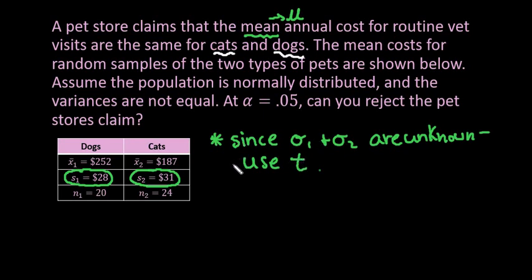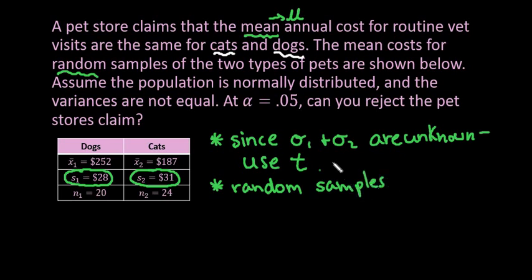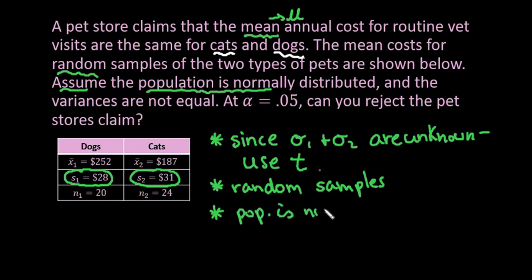For any type of hypothesis test, it's always important to have a random sample — it does tell us that we have random samples — which helps control bias. Even though bias may still be present, random samples do help control that. And then in order for the central limit theorem to kick in, you either have to have samples that are greater than or equal to 30, or you have to have a population that is normally distributed. Since it tells us to assume the population is normally distributed, that's what we are going to do.